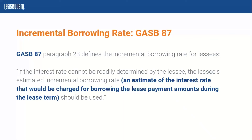From a GASB 87 standpoint, the definition is a lot more aligned with ASC 842. The guidance states in paragraph 23: if the interest rate cannot be readily determined by the lessee, the lessee's estimated incremental borrowing rate — which is an estimate of the interest rate that would be charged for borrowing the lease payments amount during the lease term — should be utilized. In summary, you should be using the implicit rate within your contract, but if that is not readily determinable, you're allowed to use your estimated incremental borrowing rate to calculate the present value of your remaining lease payments or receivables.